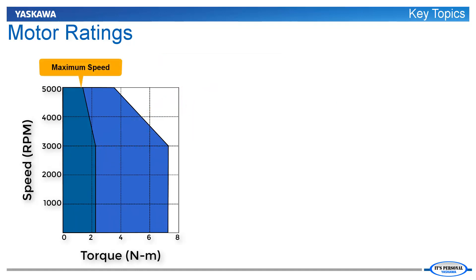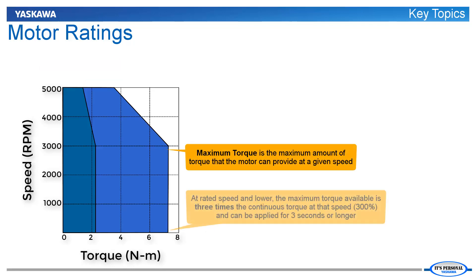The motor's maximum attainable speed is listed at the top of the speed-torque curve, and the motor's maximum torque is at the far right. The maximum torque available is generally three times the continuous torque and can be applied for three seconds or longer.